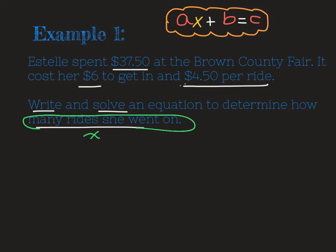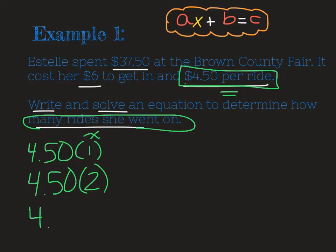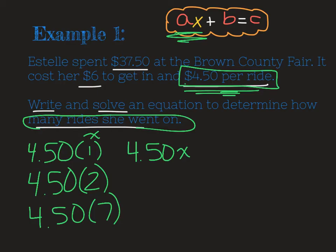The thing that I know is that she paid $4.50 per ride. So if she went on one ride, it would be $4.50 times one. If she went on two rides, it would be $4.50 times two. If she went on seven rides, it'd be $4.50 times seven. If she went on x rides, it would be $4.50 times x. So that is going to be our ax in our equation. That's the variable part, right? And then the other part is it cost her $6 just to get in. So I'm going to add that six on. She only pays that one time. She does not have to pay that over and over like she would the rides. And then all of that's equal to what she spent, which was $37.50.